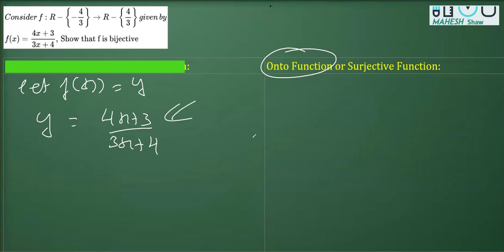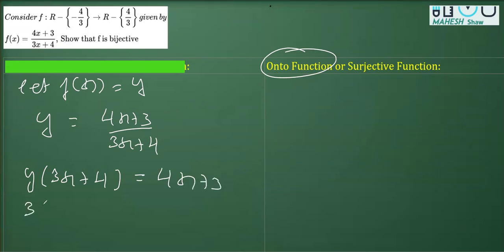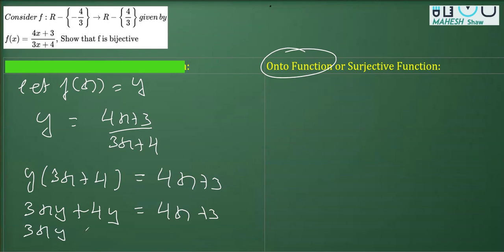We will do cross multiplication and then write x in terms of y. By cross multiplication: y(3x + 4) = 4x + 3. Opening the bracket: 3xy + 4y = 4x + 3. Now keeping the x terms together: 3xy − 4x = 3 − 4y.